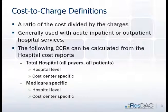A cost-to-charge ratio is a ratio of cost divided by charges, generally used with acute inpatient or outpatient hospital services. The following types of cost-to-charge ratios can be calculated from the cost report: total hospital — meaning all payer, all patients, total cost — and you can do this at a hospital level by itself, or you could look at the cost centers.